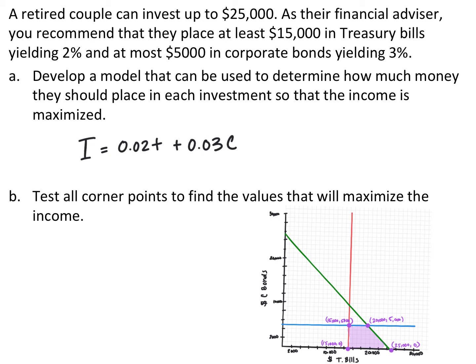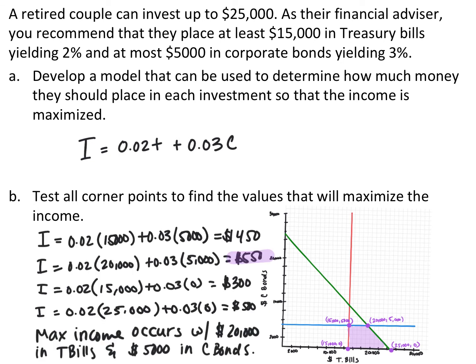We're going to test all four corner points by plugging them into our income function to figure out which one maximizes income. When you test all of these, you find that the most income earned is $550, and that occurs when you put $20,000 into treasury bills and $5,000 into corporate bonds. So once you have your objective function, graph the inequalities, test the feasible corner points, and see which one maximizes or minimizes your objective function.